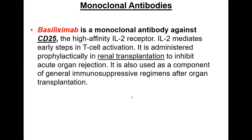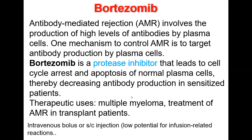Basiliximab is a monoclonal antibody (the suffix '-mab' indicates monoclonal antibody) against CD25 protein on the membrane of T-lymphocytes, with high affinity to the interleukin-2 receptor. Interleukin-2 mediates early steps in T-cell activation. Basiliximab is administered prophylactically in renal transplantation to inhibit acute organ rejection and as a component of general immunosuppressive regimens after organ transplantation, with predominant inhibition of cellular immunity.